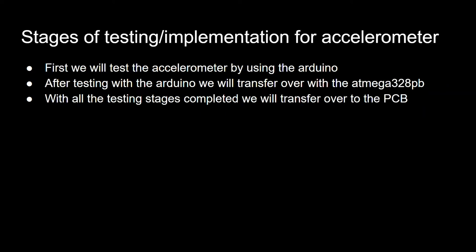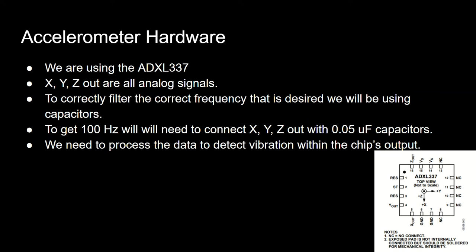Stages of testing and implementing for the accelerometer: first, we will test the accelerometer by using the Arduino. After testing the Arduino, we will transfer over to the ATmega 328PB. With all the testing stages completed, we will transfer over to the PCB. For accelerometer hardware, we are using the ADXL337. The XYZ outputs are all analog signals. To correctly filter the desired frequency, we will be using capacitors. To get 100 Hz, we will need to connect the XYZ outputs with 0.05 microfarad capacitors. We need to process the data to detect vibration within the chip's output.